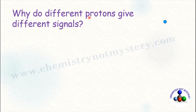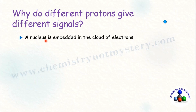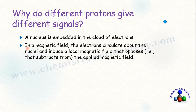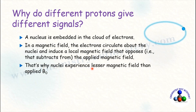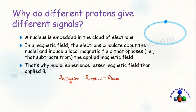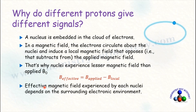Different protons give different signals because a nucleus is embedded in a cloud of electrons. In a magnetic field, electrons circulate around the nucleus and induce a local magnetic field that opposes the applied magnetic field. Therefore, nuclei experience a lesser magnetic field than what is applied. The effective magnetic field experienced by a nucleus equals B_applied minus B_local, and it depends on the surrounding electronic environment.